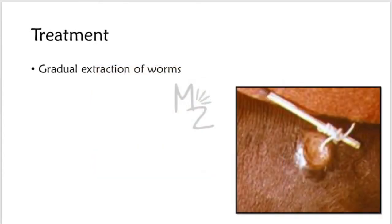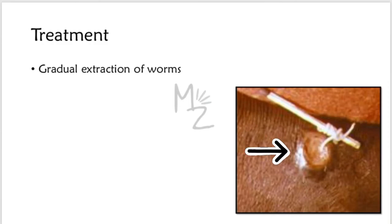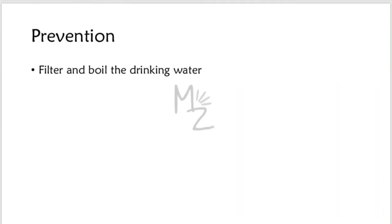Treatment: the time-honored treatment consists of gradually extracting the worm by winding it up on a stick over a period of days. As seen in the picture, the worm is rolled over a matchstick and extracted about two inches daily. After extraction of the worm, the ulcer will heal.